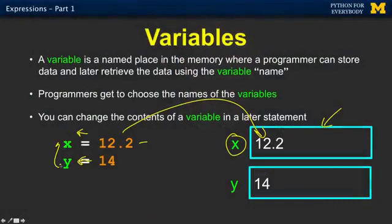Then we go to the second statement. Hey Python, find some memory, some spare memory that you got laying around, label it y, and put 14 into that. That's how these things work, and you chose x and you chose y.